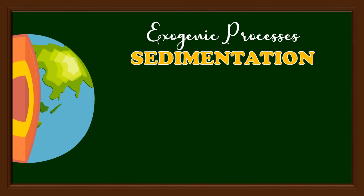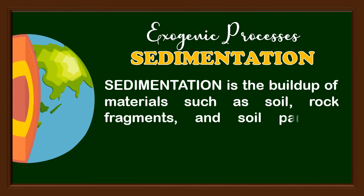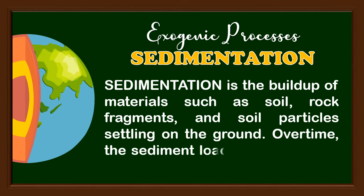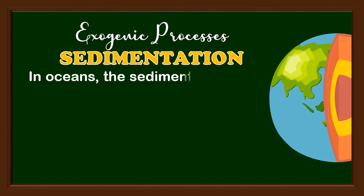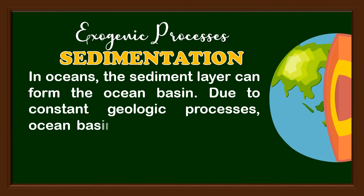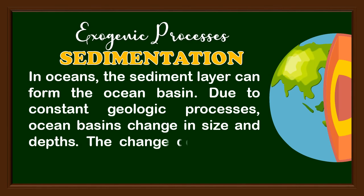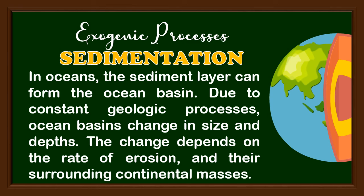The fourth type of exogenic process is sedimentation — the buildup of materials such as soil, rock fragments, and soil particles settling on the ground. Over time, the sediment load becomes thick and forms a new layer of ground. In oceans, the sediment layer can form the ocean basin. Due to constant geologic processes, ocean basins change in size and depth, depending on the rate of erosion and their surrounding continental masses.